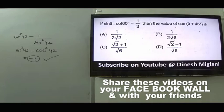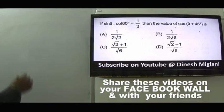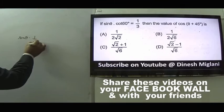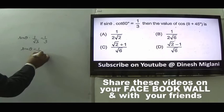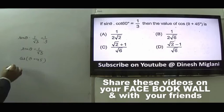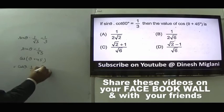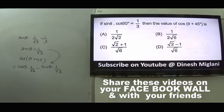Question 41: sinθ·cot60 = 1/3. Since cot60 = 1/√3, sinθ = 1/√3. Find cos(θ + 45°) = cosθ·cos45° - sinθ·sin45°. Since sinθ = 1/√3, we find cosθ and substitute values using the expansion formula.